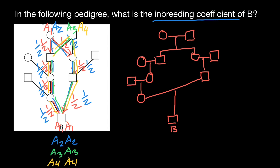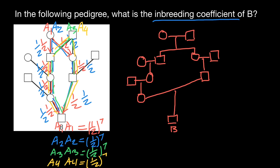Let's count the probability. For A1, A1, we count the steps: one, two, three, four, five, six, seven times — giving us one half to the power of seven. And the same is going to be true each time: one half to the power of seven, one half to the power of seven, and one half to the power of seven — one for each of the four variants.